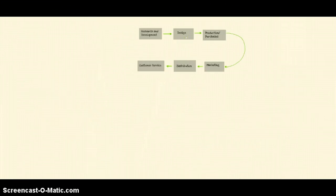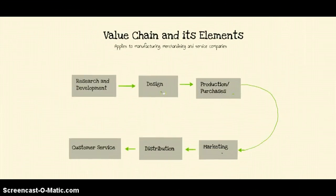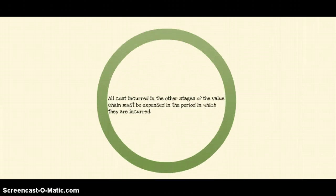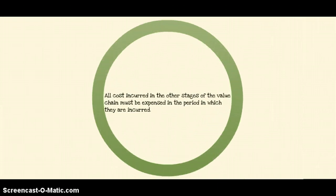Let's take a look at our value chain again. Do you see the one element that is production or purchase? Any costs incurred in this particular element are going to be treated as inventory until it is sold. How about all the other elements — research and development, design, customer service, distribution, and marketing? Those are expensed in the period that they are incurred. So if you spend $200,000 for research and development, you have to write it off as an expense in the current period.